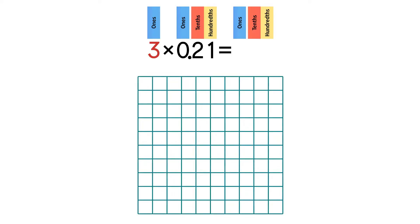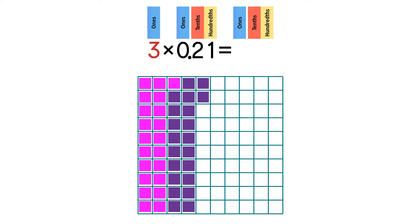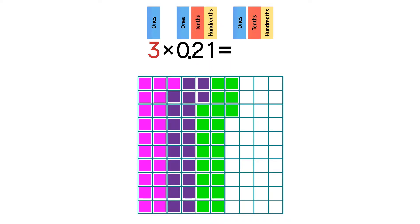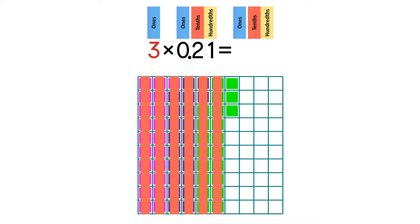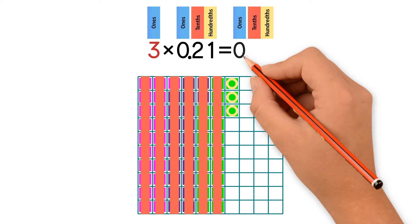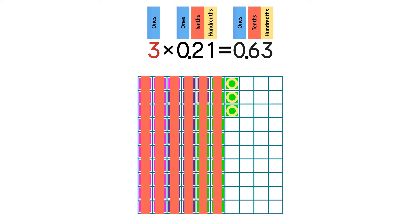Let's do another example: three times 21 hundredths. Shade in three sets of 21 squares. Now add them up — instead of counting, let's draw lines for tenths and circles for hundredths. We have six tenths and three hundredths, so we place our decimal point and write a six in the tenths column and a three in the hundredths column. The answer is 63 hundredths.